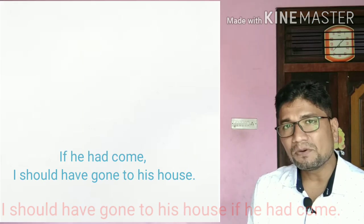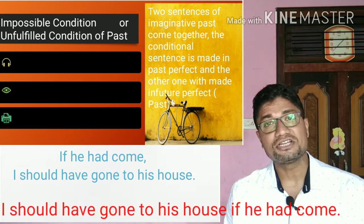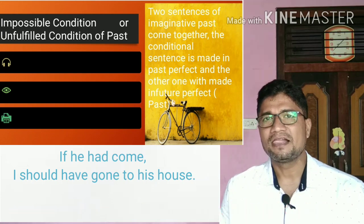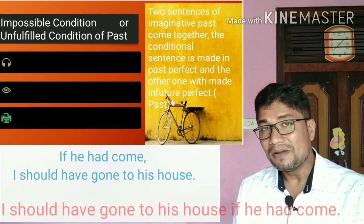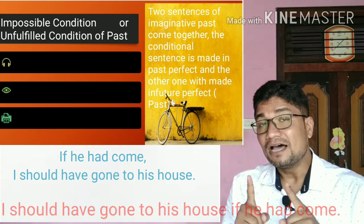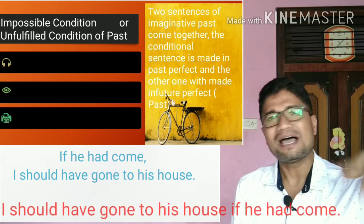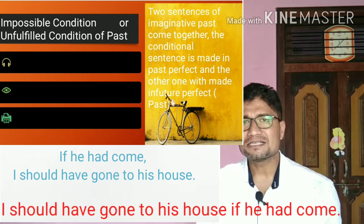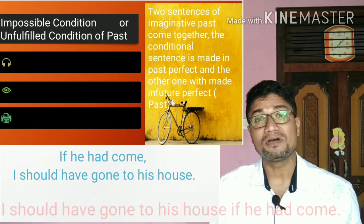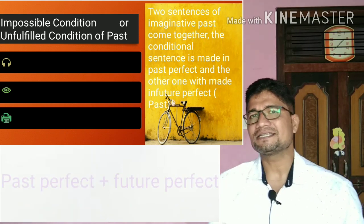Impossible conditions — what are they? These are impossible or past imagination-based sentences. For example: 'If he had come, I would have gone to his house' — he didn't come and I didn't go. This means the imagination-based events of the past, which have no connection with reality or facts, are called impossible condition sentences or unfulfilled condition of the past.